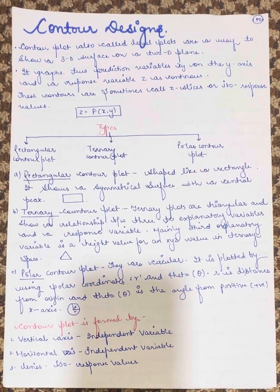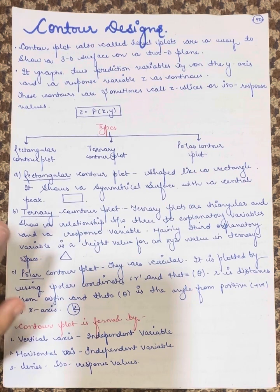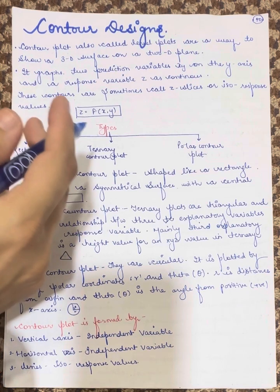It graphs two prediction variables, X and Y on the Y axis, and a response variable Z as a continuous value. These contours are sometimes called Z slices or iso response values.